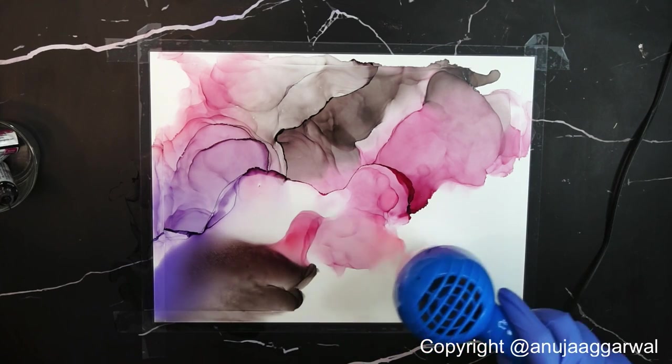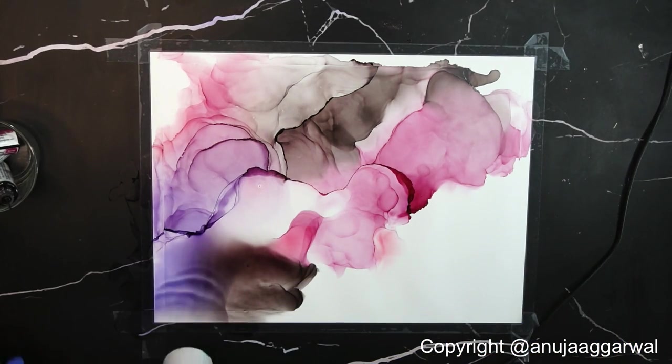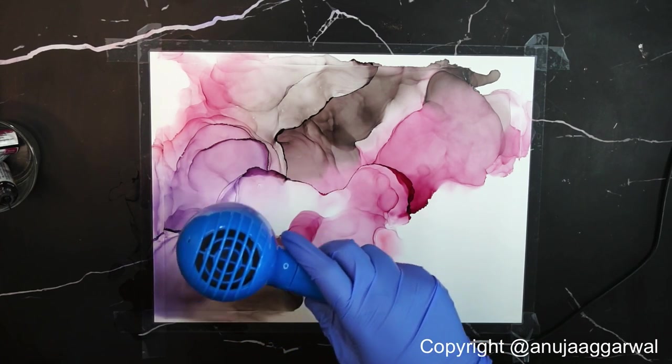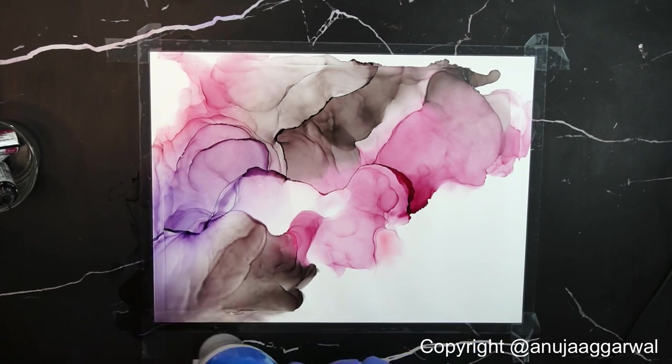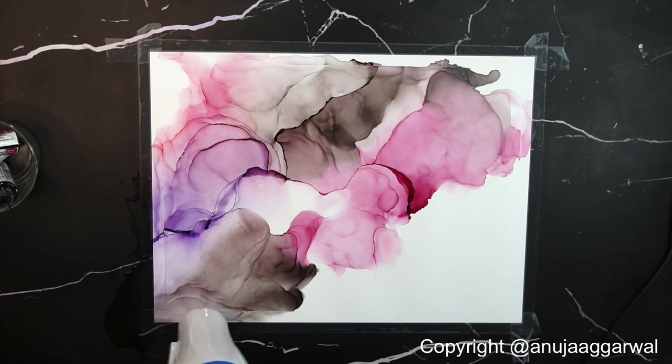Whenever you work by taping your paper, always remember to choose a flat surface where there are no inclines, otherwise all your ink will flow to one side. You would not want that, it would be harder to control.